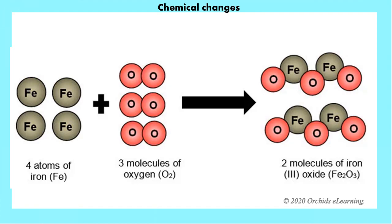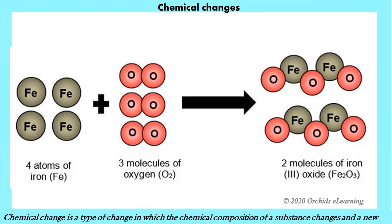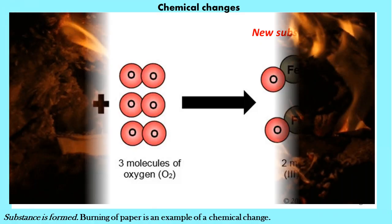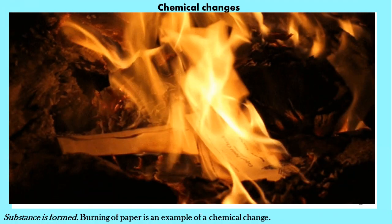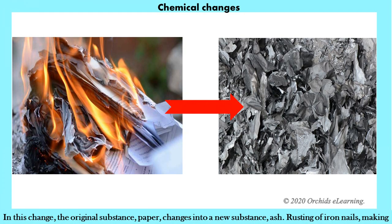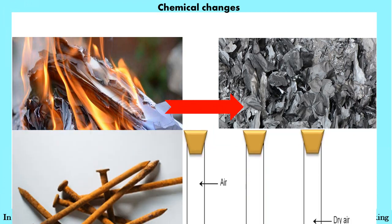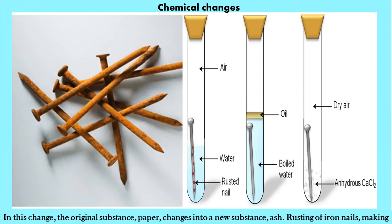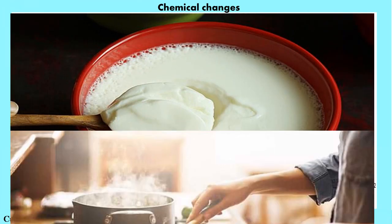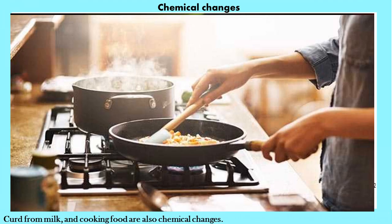Chemical change is a type of change in which the chemical composition of a substance changes and a new substance is formed. Burning of paper is an example of a chemical change — the original substance, paper, changes into a new substance, ash. Rusting of iron nails, making curd from milk, and cooking food are also chemical changes.